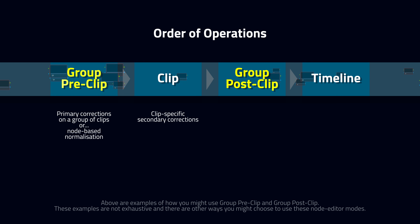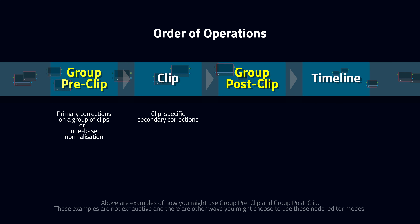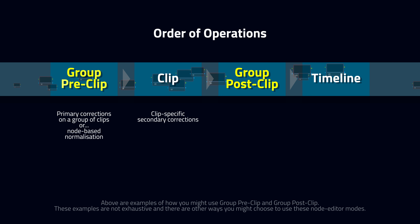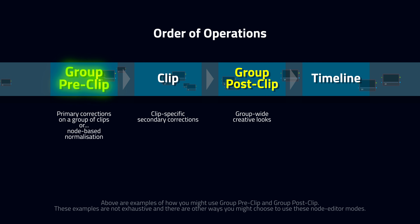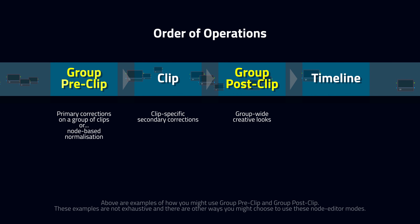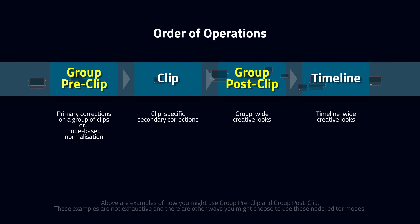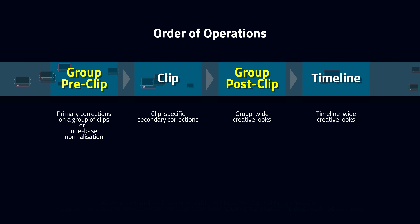If a group of clips all required the same primary correction, I might choose to perform that correction pre-clip — meaning I can make secondary corrections at the clip level, and those secondary corrections will be executed after the primary corrections performed in the pre-clip grade. Alternatively, if I'm using a group grade to apply a creative look to a collection of shots, I would probably choose to perform that in the Group Post-Clip tab. This allows me to use Group Pre-Clip for primary corrections and Clip to shot-match each clip individually so they will work with my creative look.